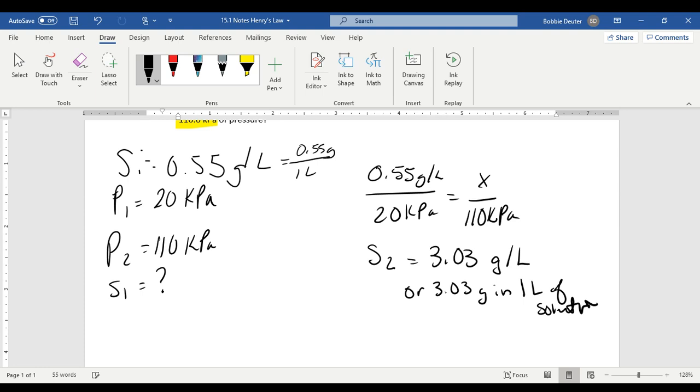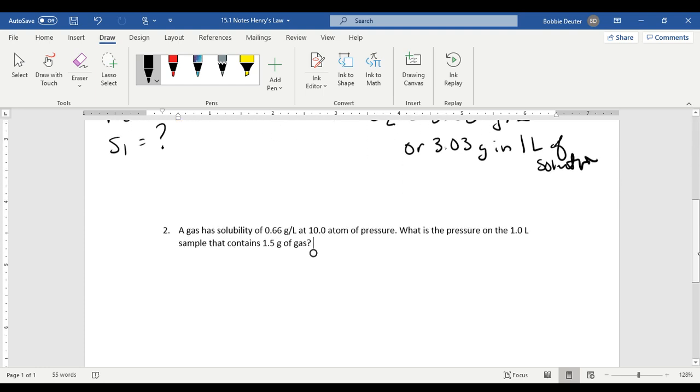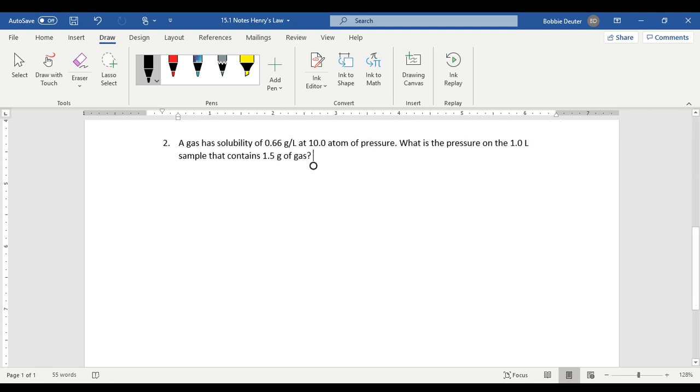And so that's how we figure out those. Let's do another problem with Henry's Law. Okay, so let's look at what we have again. So a gas is 0.66 grams per liter at 10 ATMs of pressure. What is the pressure of one liter of a sample of gas that contains 1.5 grams of gas?